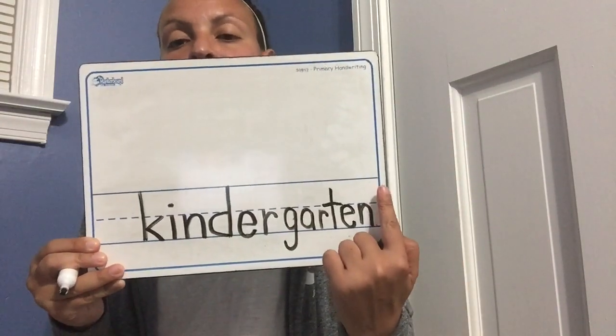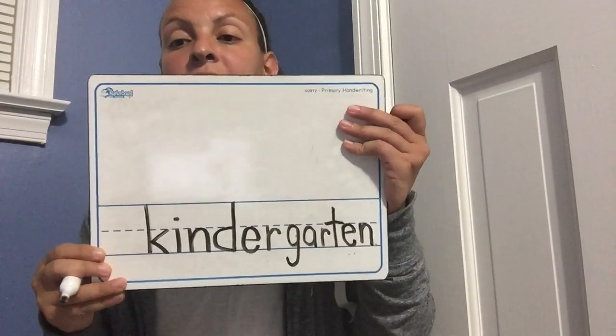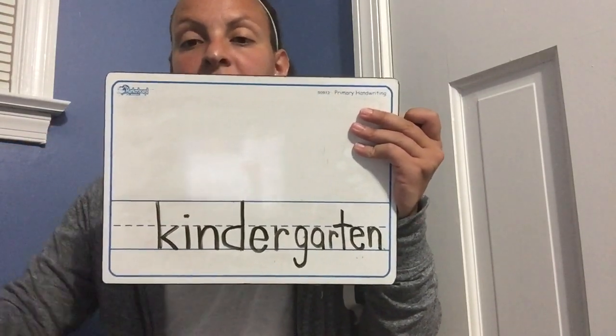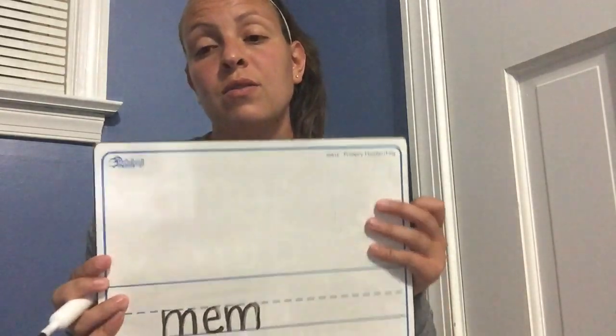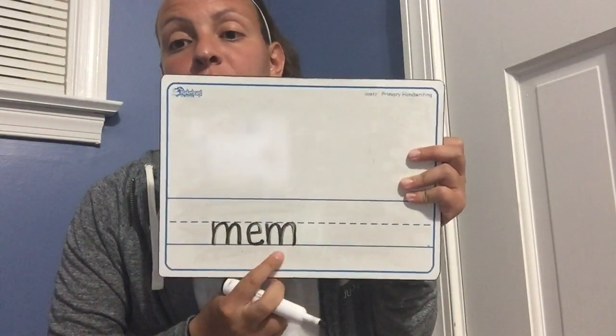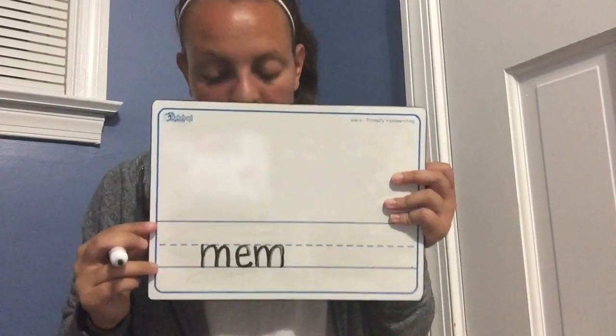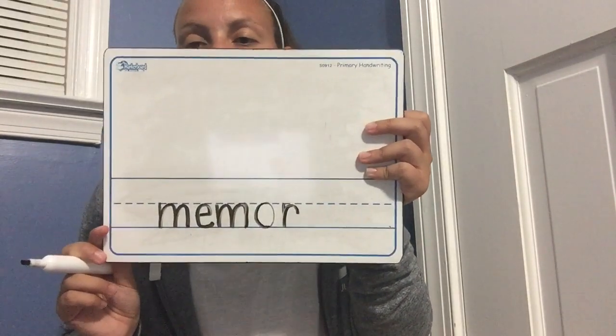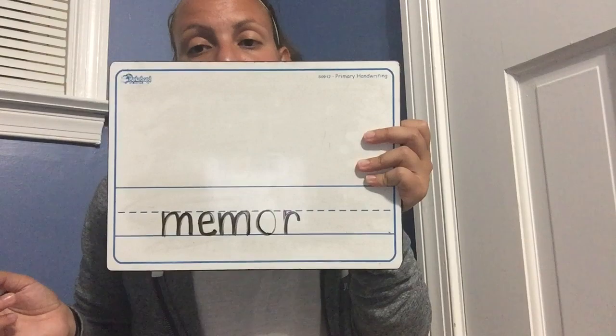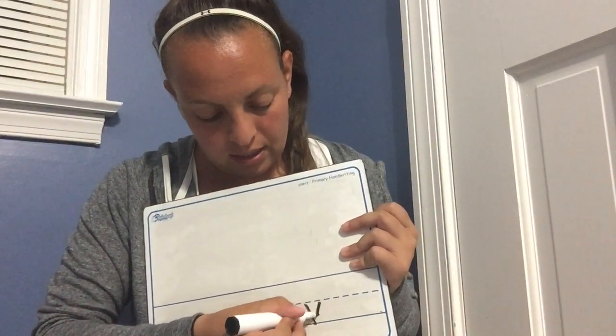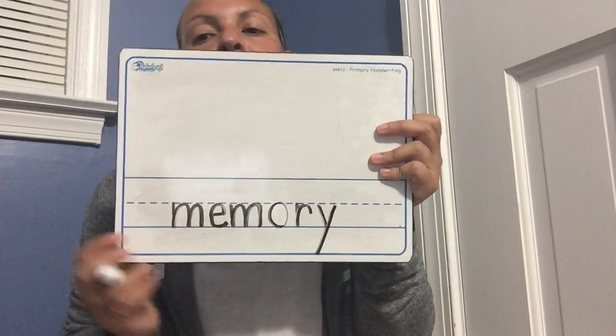After 'kindergarten,' you need another finger space. So far we have 'my favorite kindergarten.' The next word we're going to write is 'memory.' I have the first three letters for you: M, E, M — all lowercase. Then there's an O, after the O there's an R, and after the R there is a lowercase Y. That's the word 'memory.'